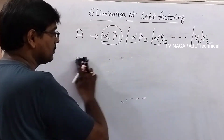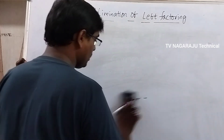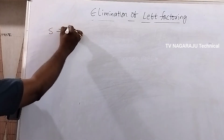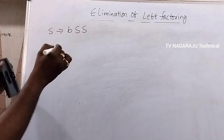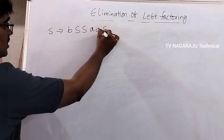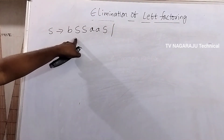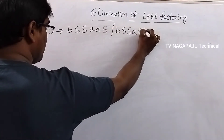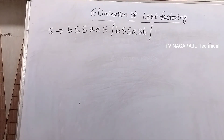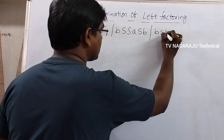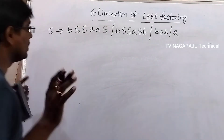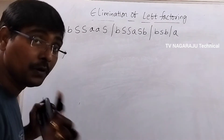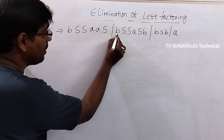Now we will discuss the same thing with an example. Suppose the grammar is: S tends to bSS | aAS, and the second production is bSd | a. This is the given grammar.